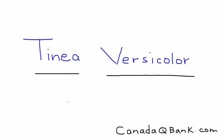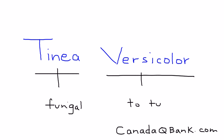Tinea versicolor is the topic. Tinea refers to a fungal etiology — a rash caused by fungus. Versicolor essentially is a term that means to turn color. We'll talk about this in this video.